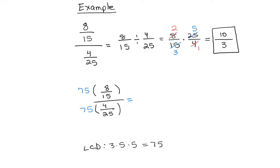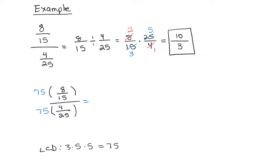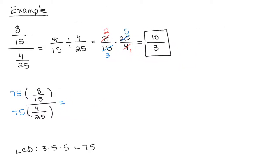So we have 75 over 1 times 8/15. It's up to you whether you need to show this stuff. And 75 over 1 times 4/25. And then I am going to cancel. The 15 goes into 75 five times, and the 25 goes into 75 three times.